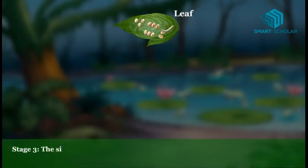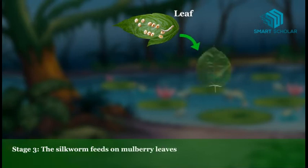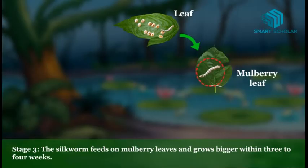Stage 3: The Silk Worm feeds on Mulberry leaves and grows bigger within 3-4 weeks.